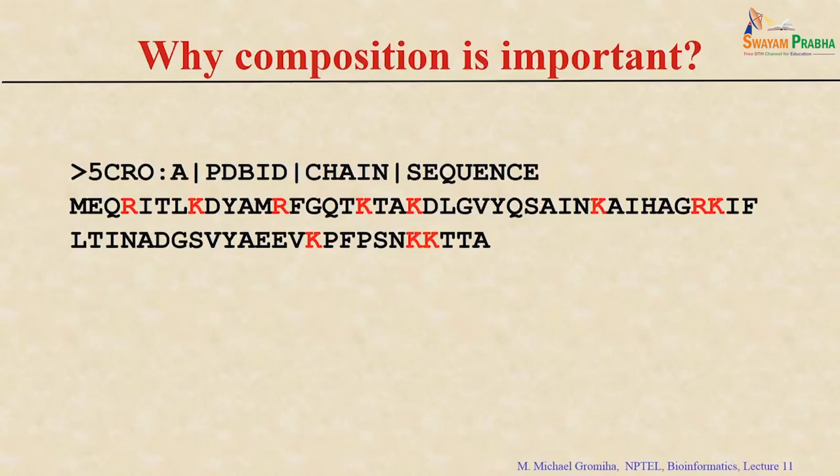I'll give another sequence. This is another sequence called 5-cro. This is a short sequence. By looking at a short sequence you will get the predominance of some specific residues. Which residues are dominant? Positively charged residues.